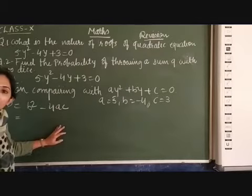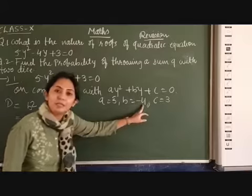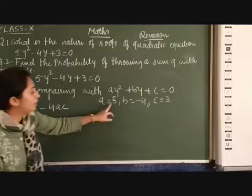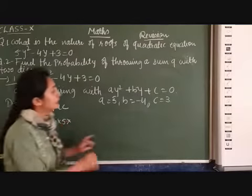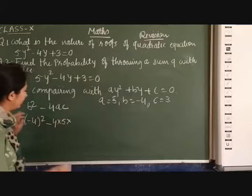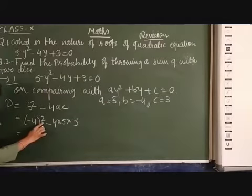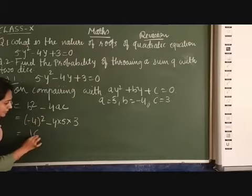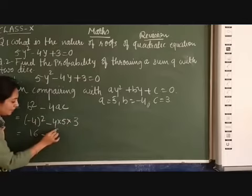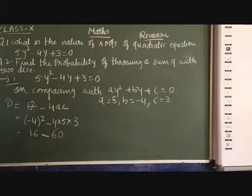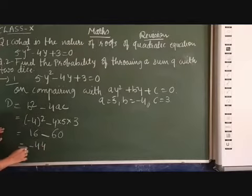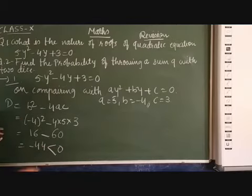Now from here, we place its value. b here is -4, so let me write down here, (-4)² - 4, a value is 5 and c value is 3. So, since the power is even, so -4 will be converted into +4. 4 square is 16 minus 4, 5 is 20, 3 is 60. And when we subtract it, 60 - 16, it will be 44. So, -44.